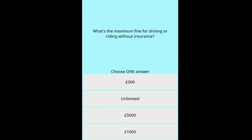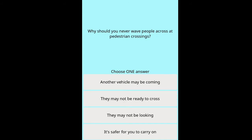Question: What's the maximum fine for driving or riding without insurance? Options: £500, unlimited, £5,000. Question: Why should you never wave people across at pedestrian crossings? Options: another vehicle may be coming, they may not be ready to cross, they may not be looking, it's safer for you to carry on.